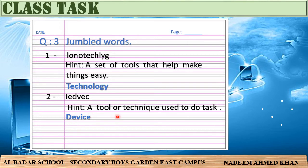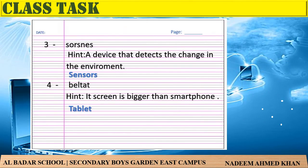Number three — jumble word: S O R S N E S. Hint: a device that detects the change in the environment — یعنی ایک tool جو ماحول میں تبدیلی کا پتہ لگاتا ہے۔ Answer: Sensors.